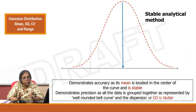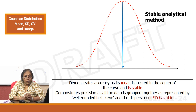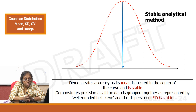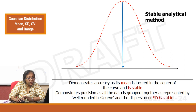The mean is always in the center of the curve, and if it is stable, it will stay in one position and not shift. If you have done 20 runs of hemoglobin and got a mean of 12, that mean will stay as 12 — it should not shift even after 30 or 50 runs. That is known as a stable mean. The method demonstrates precision as all data is grouped together and represented by a well-rounded bell curve, with stable SD.